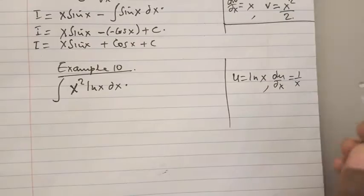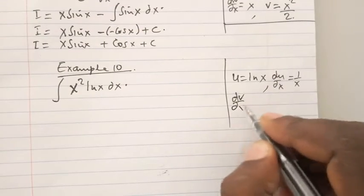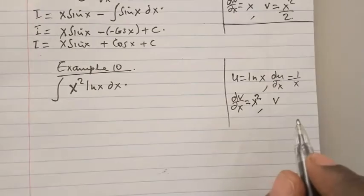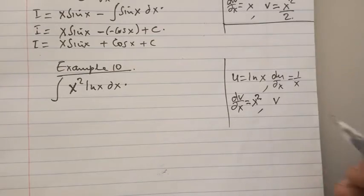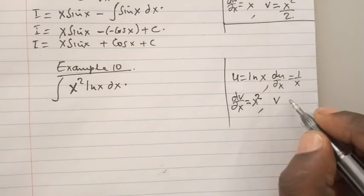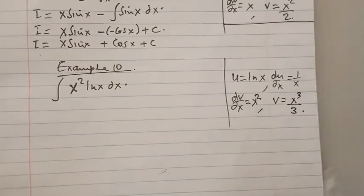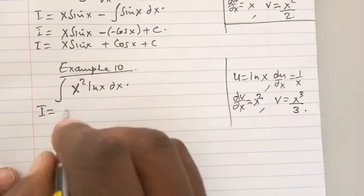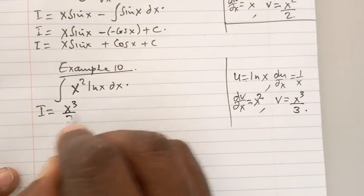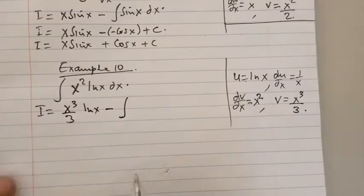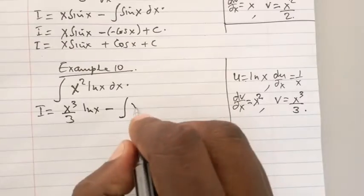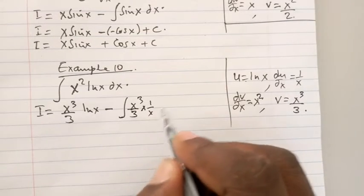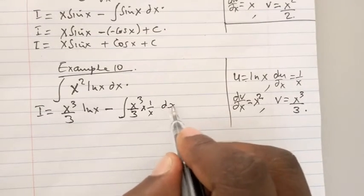That means anything else, which is dv/dx, is supposed to be x². And therefore v means integrating this so that we have v equals x³/3. Therefore, the integral becomes uv, that is x³/3 ln x, minus the integral of v, x³/3, times du/dx, times 1/x, with respect to x.